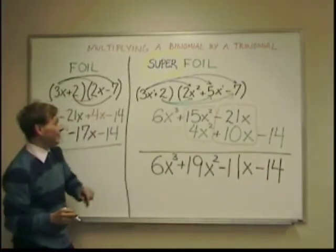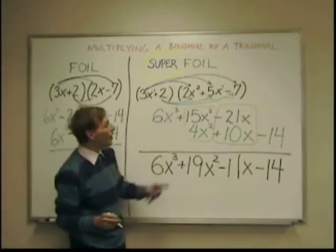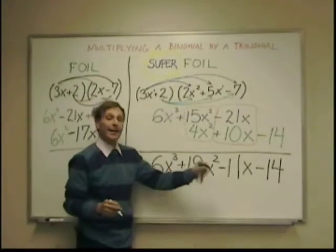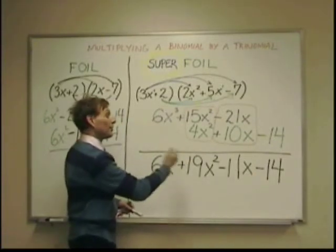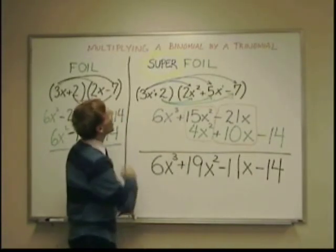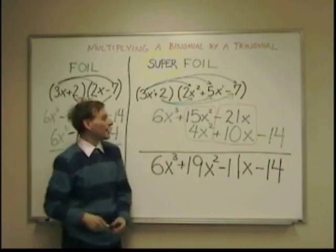So I have 6x to the third plus 19x squared minus 11x minus 14. And that is how you do the super foil multiplying a binomial by a trinomial.